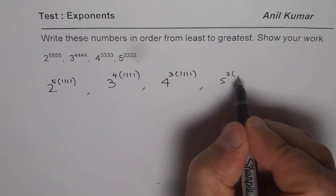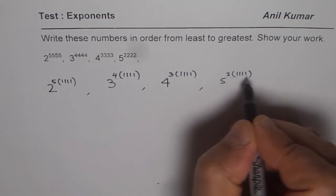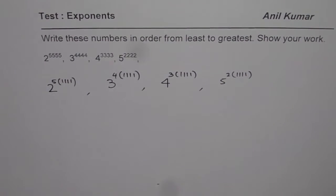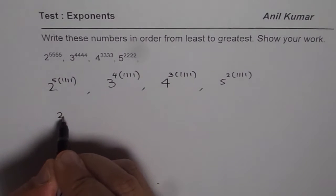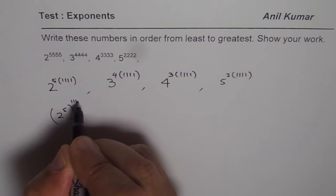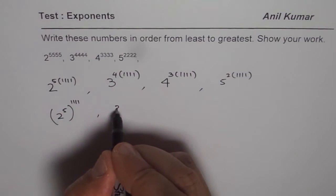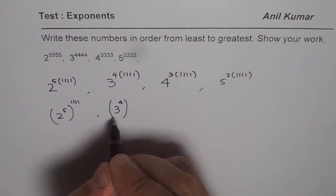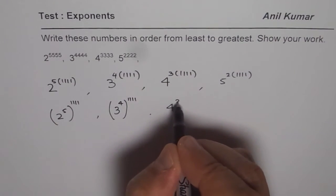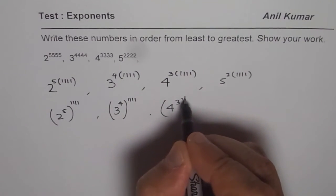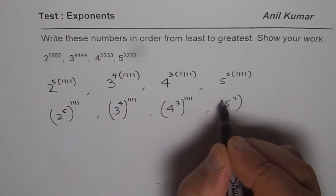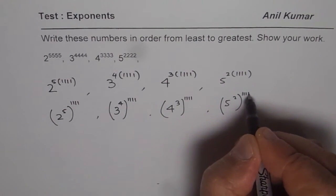5, 2 times all these ones will give you 2222, right? That is the whole concept. Now, I can write this as 2 to the power of 5 to the power of 1111. I could write this as 3 to the power of 4 to the power of 1111. 4 cube to the power of, and similarly, 5 square to the power of, perfect.